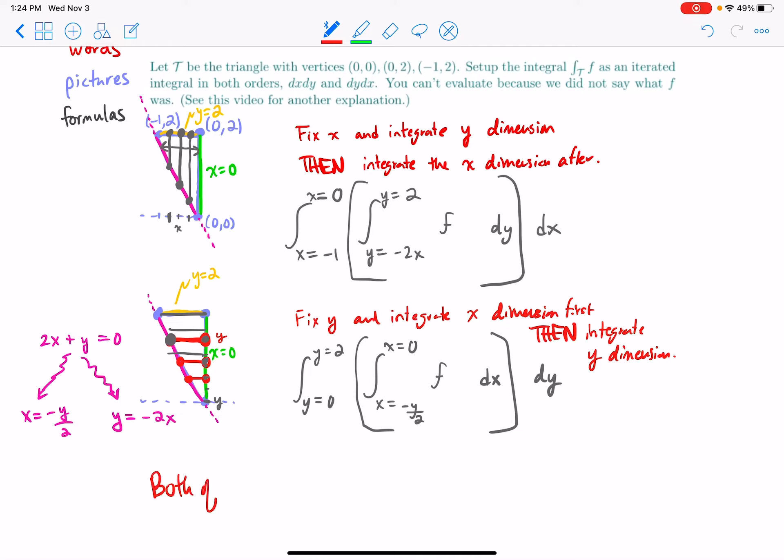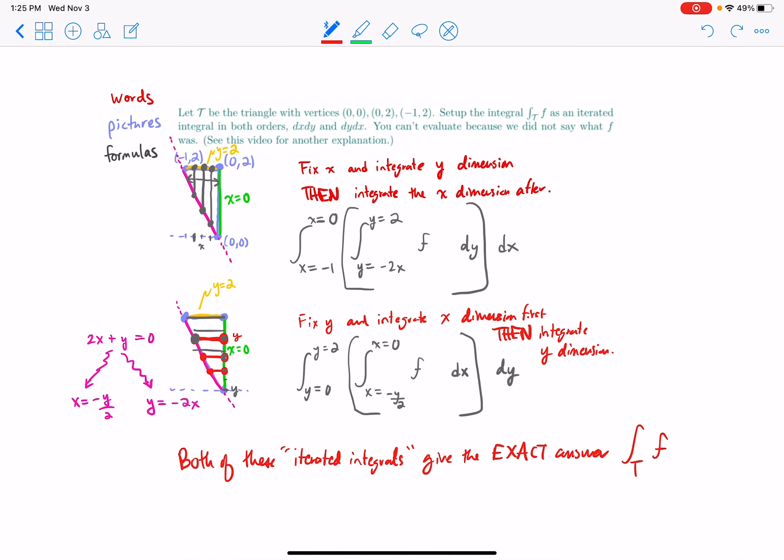Both of these iterated one-dimensional integrals—so iterated, to iterate means to repeat something, to do something over and over. To iterate is to repeat something, and so I repeatedly integrate in one dimension. That's why they're called iterated integrals—give the exact answer, which is the weighted sum of the values of f over the triangle T, weighted by the triangle's two-dimensional volume, because we did two fundamental theorem of calculi. And that's how it works.